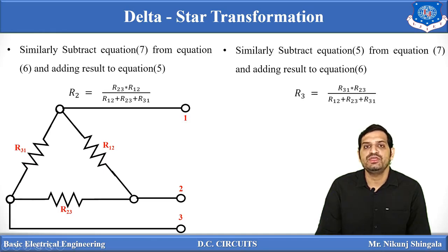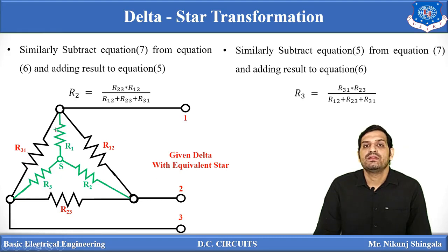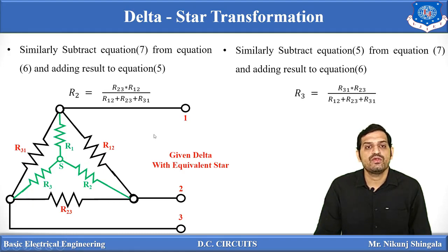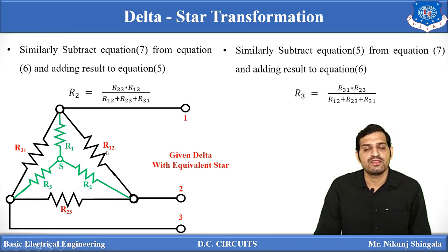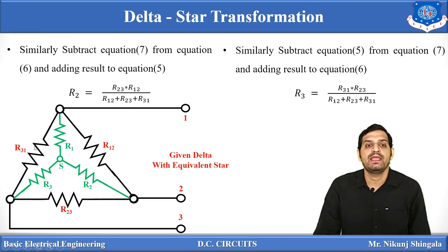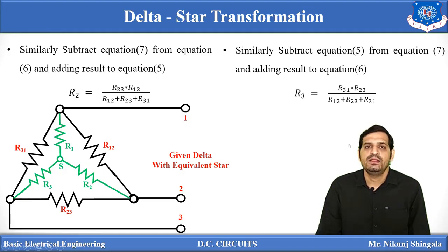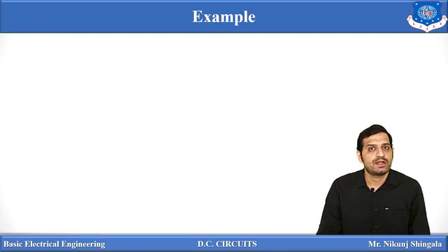So the given delta is now converted into the equivalent star. The trick to remember the equation: the resistance of any branch of the equivalent star is obtained by multiplying the two adjacent delta resistances and dividing by the sum of all three delta resistances. For example, R1 is obtained by multiplying adjacent delta resistances R12 and R31, divided by R12 + R23 + R31.